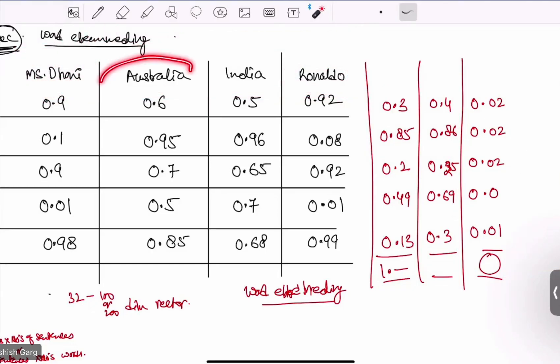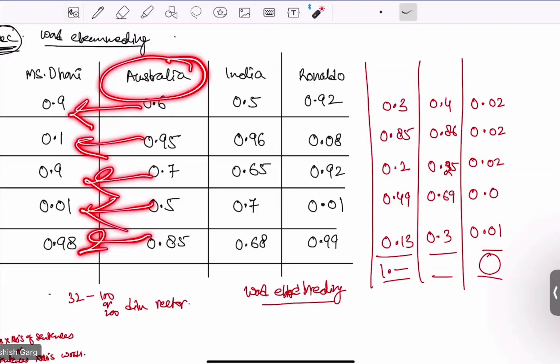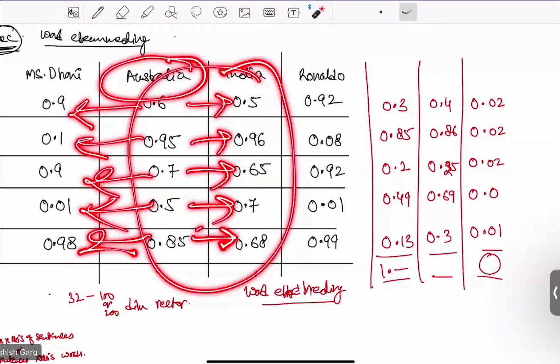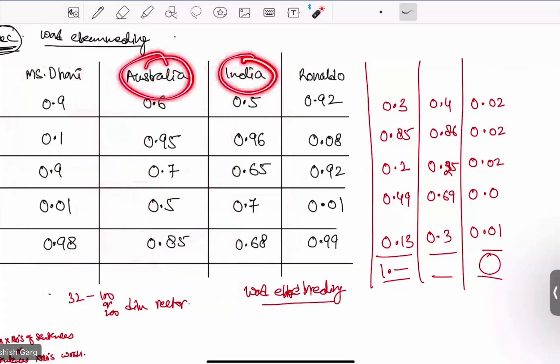Similarly, if you are finding the most similar word for Australia, and you do the subtraction between this, this, this and this. So you will get the subtraction value between India and Australia will be nearest. So Australia and India will be nearer to each other and both are countries.